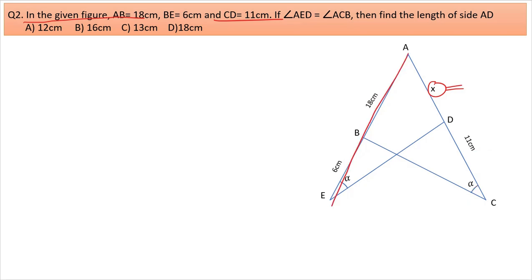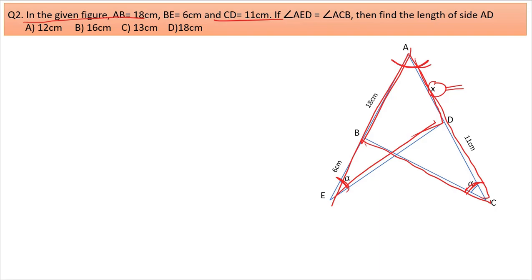We consider triangles AED and ABC. Angle A is common to both triangles. Since angle AED equals angle ACB (both theta), by AA similarity the third angles must also be equal. So triangle AED is similar to triangle ABC.